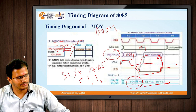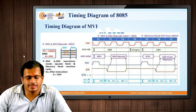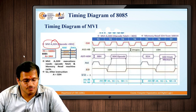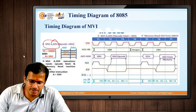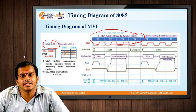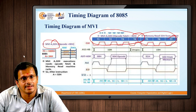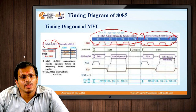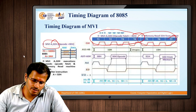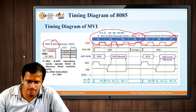Next we look at the MVI instruction. In the example, MVI A, 32H is used. The opcode of MVI requires 4 T-states, represented as T1 to T4. The memory read operation for the immediate data requires 3 T-states. The clock signal goes from low to high for T1, T2, T3, and T4.